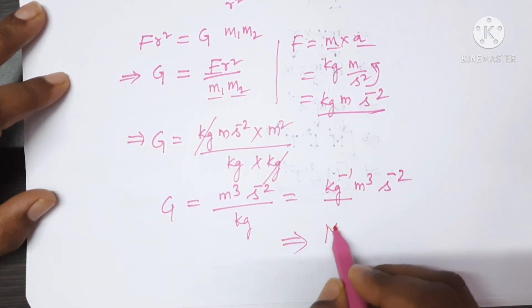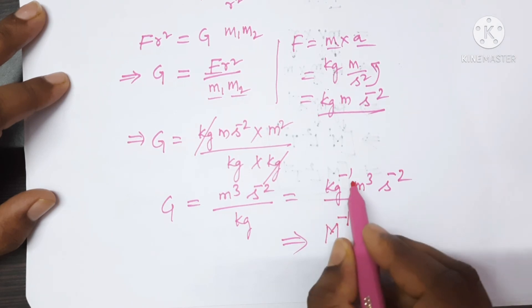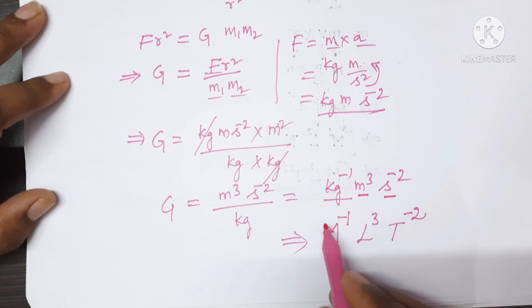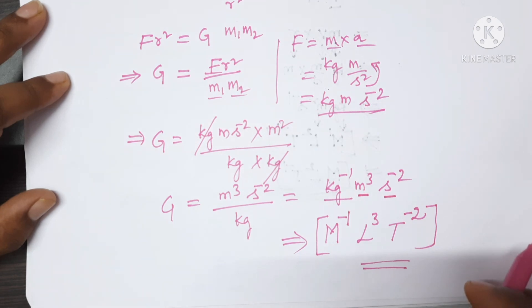Kilogram is measured in terms of capital M power minus 1, meter is measured in terms of length so L cube, and second is measured in terms of T, so T power minus 2, enclosed in square brackets. This is the dimensional formula for gravitational constant.